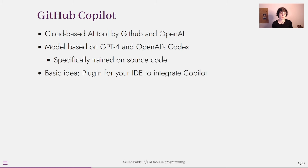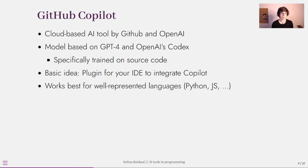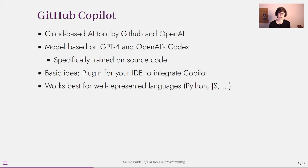GitHub Copilot works best for well-represented languages like Python or JavaScript because these languages were most prominent in the training data. But I personally use it mostly for R to write functions and data analysis and I find it really good for that as well. If you happen to use Python for data analysis then you might even have a bigger advantage.